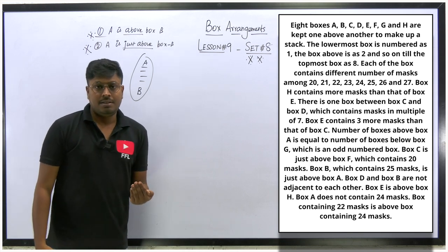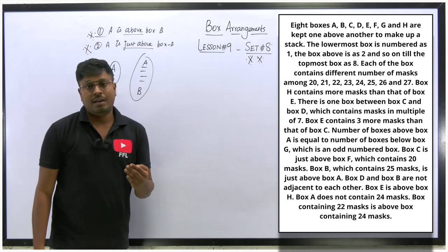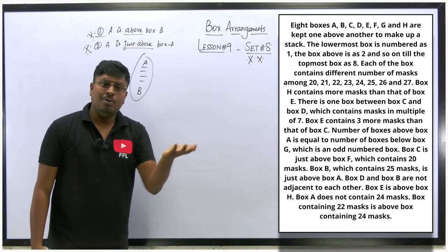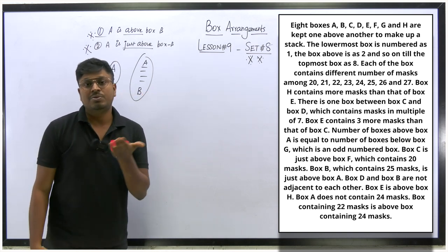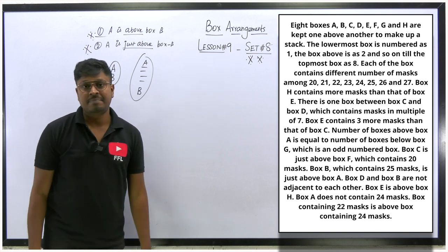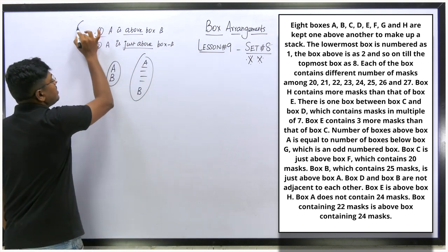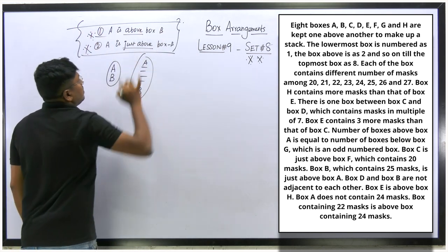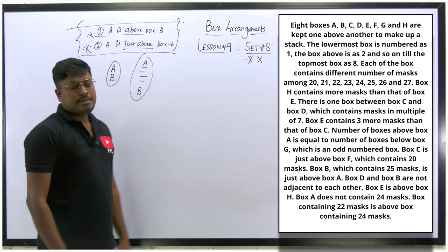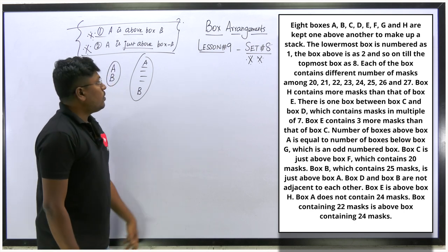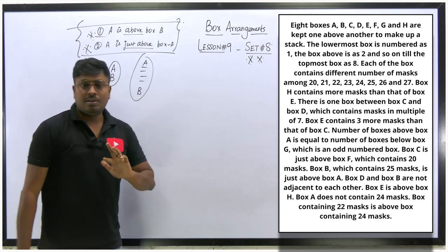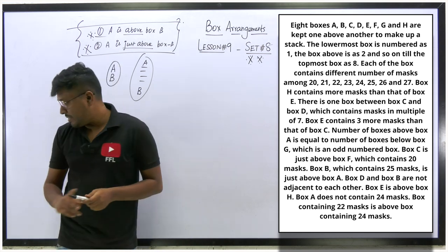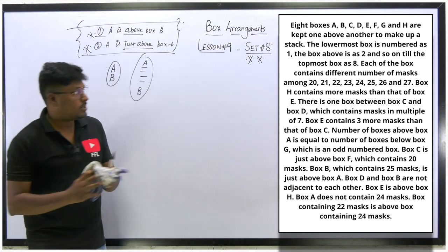These two points are most important — many students get confused while solving arrangement or floor-based puzzles. For example, 'L is on the second floor, M is just above floor number three' — these are cases where students make mistakes. Never forget this distinction. I hope you now understand the difference between 'just above' and 'above.' Now let me move on to the arrangement question.